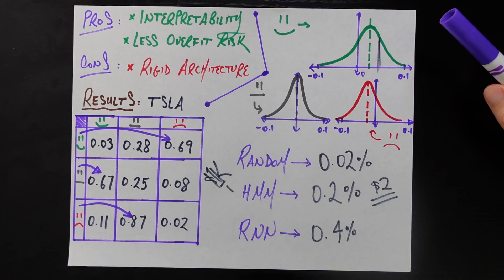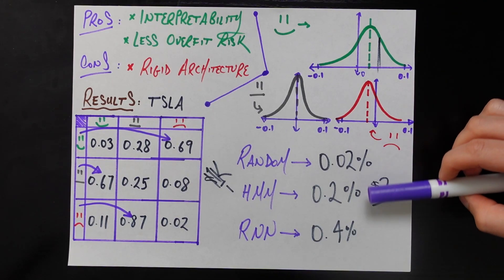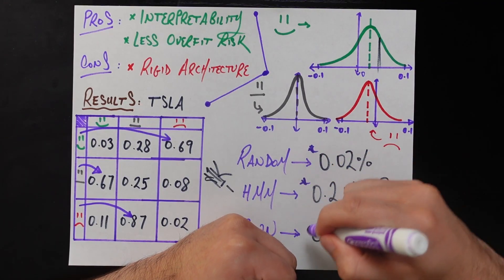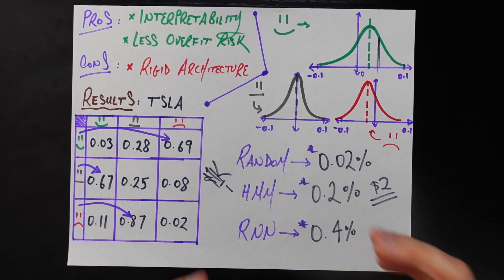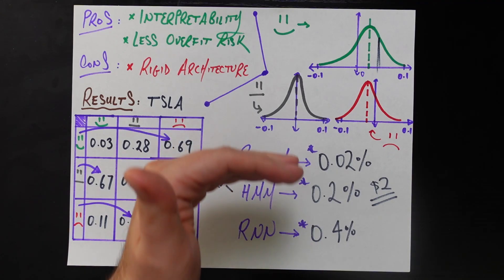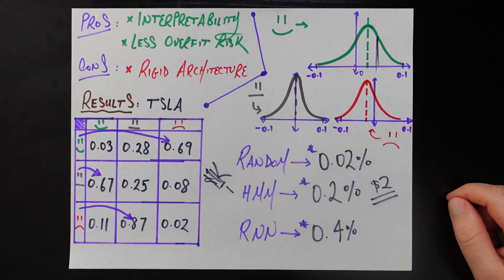Many grains of salt to be taken here — this is just one day's returns, and the stock market is notoriously difficult to predict. Who knows what the numbers would look like one day earlier or later. This doesn't mean the RNN always does double the HMM, but on this given day the RNN probably would have been the better choice. That said, it was really cool to see a positive return better than random using the hidden Markov model. If you have questions or ideas for more stock trading strategies, drop them in the comments. If you liked this video, please like and subscribe!